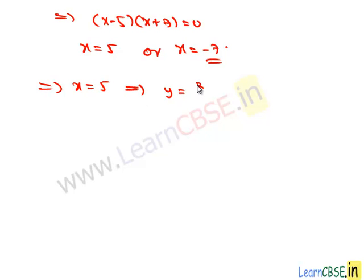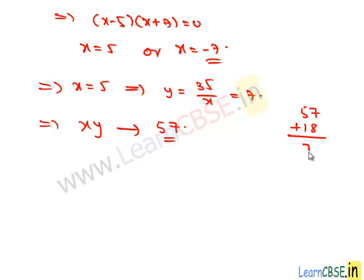Then we get the value of y, which is 35 upon x. It is equal to 7. Therefore, the two-digit number is x, y and it is equal to 57. Let's check our answer. When we add 18 to this number, we get 75. Here the digits are interchanged. So our answer is right and 57 is the required two-digit number. And this completes our solution.